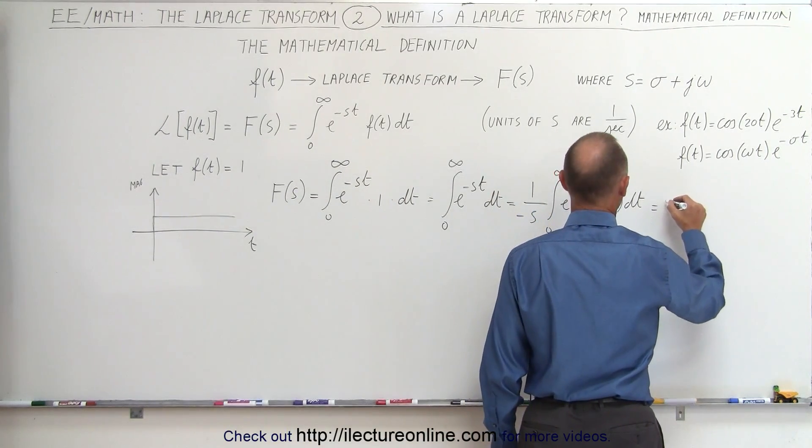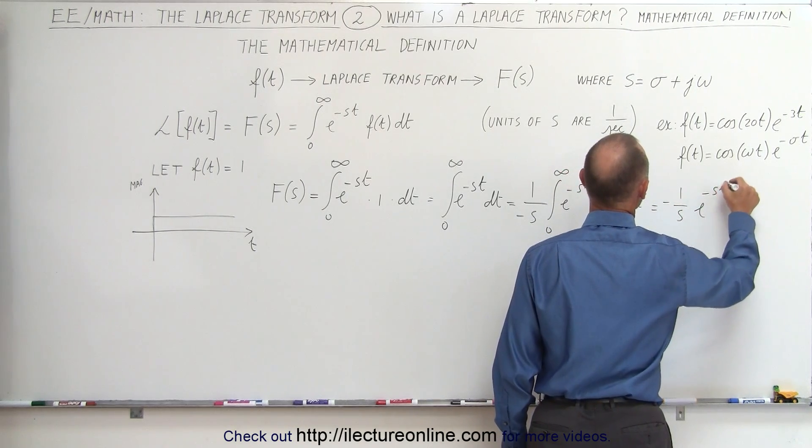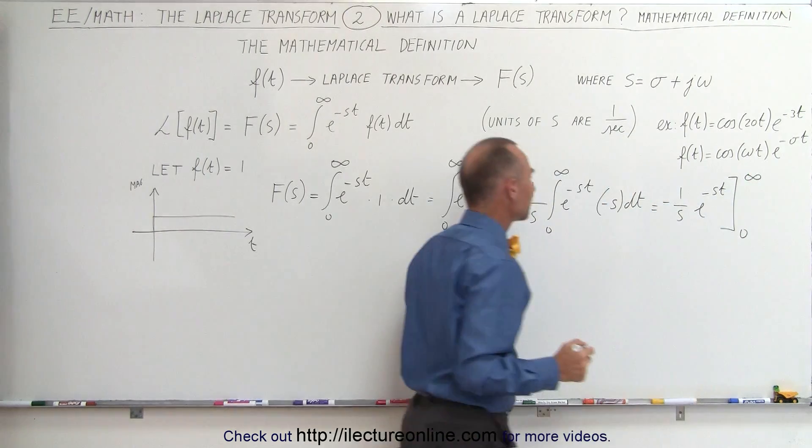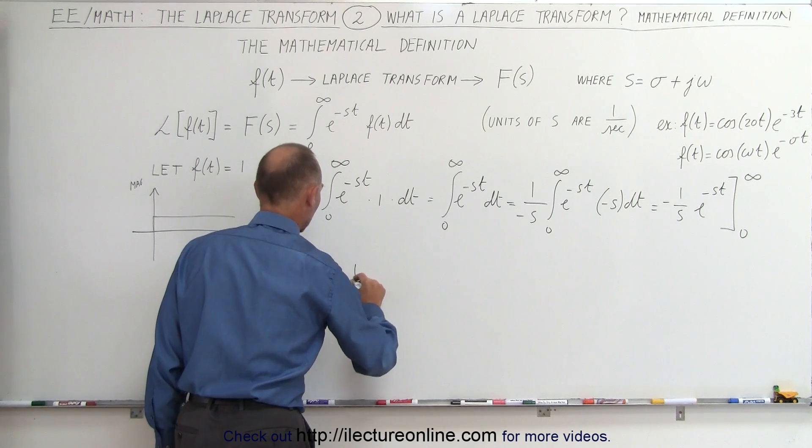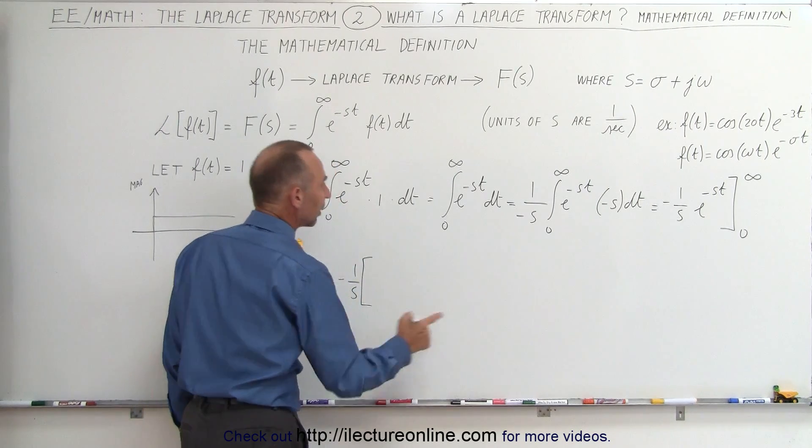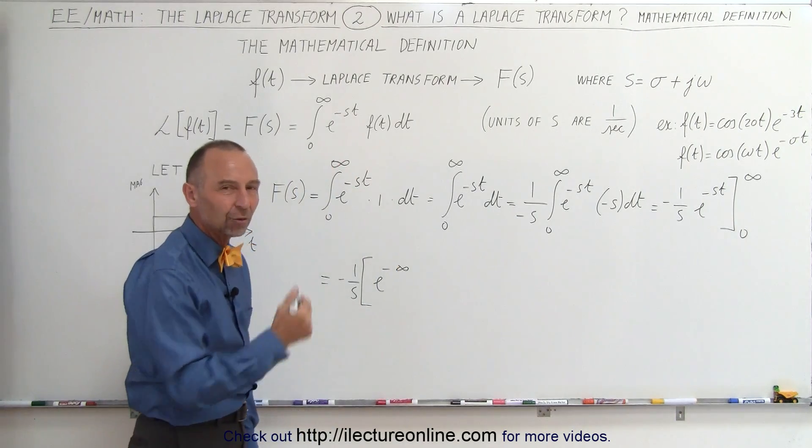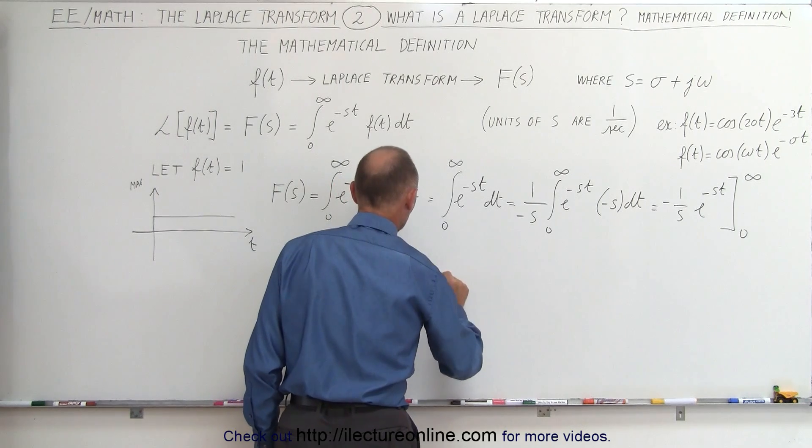So this becomes equal to minus 1 over s times e to the minus st evaluated from 0 to infinity. When we plug in the upper limit, we get minus 1 over s times, plug in the upper limit, we get e to the minus infinity. Of course, e to the minus infinity, that's 1 over e to infinity, which is 0, minus e to the 0.